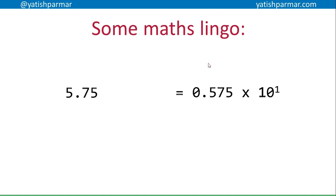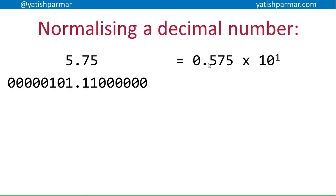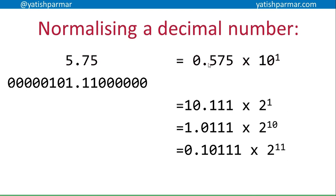Some quick maths lingo: if I want to store 5.75, I can write that as 0.575 times 10 to the 1 — I've normalised the number. Standard form, something like that. That's the mantissa, and that number up there is the exponent. So if I want to normalise a floating point number, I can write it in the same kind of form. I can write 5.75 in binary as 10.111 times 2 to the 1, or 1.0111 times 2 to the 10, or 0.10111 times 2 to the 11 — that's 2 to the 3.